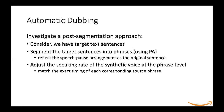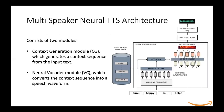In this presentation, we investigate a post-segmentation approach towards generating automated dubs. Given target text sentences, we first segment them into phrases using the prosodic alignment module, which reflects the speech-pause arrangement of the original sentence. Second, we adjust the speaking rate of the synthetic voice at the phrase level to match the exact timing of each corresponding source phrase.